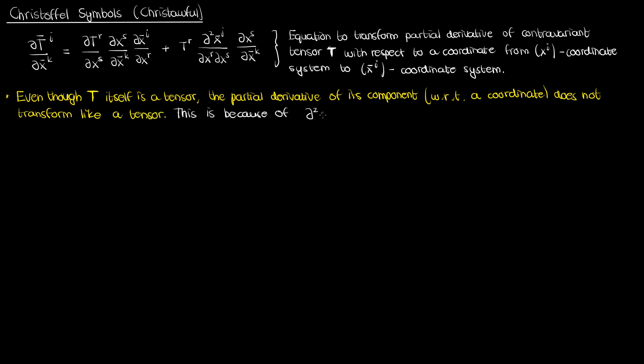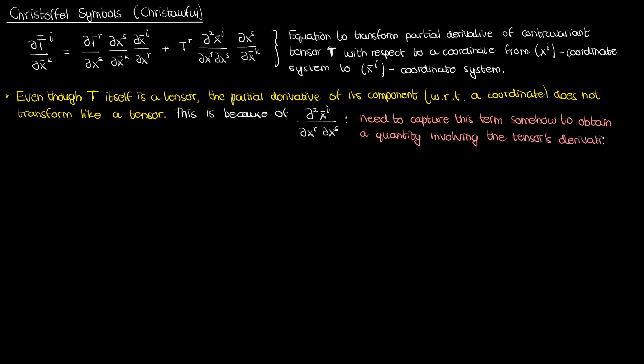The reason behind this is the mixed partial derivative term. I showed in the last video that if this mixed partial derivative was zero — that is, if we had an affine or linear coordinate transformation — then the tensor component's partial derivative would transform like a tensor: a mixed tensor of contravariant rank 1 and covariant rank 1 to be specific. Because this mixed second partial term throws such a wrench into establishing a tensor transformation law for the derivative of a tensor, we need some quantity to capture this term and find a quantity involving the tensor component's partial derivative that does transform like a tensor.